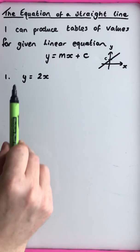For x equals 0: 3 lots of 0 is 0, and 0 minus 4 is negative 4. For x equals 1: 3 times 1 is 3, and 3 minus 4 is negative 1. For x equals 2: 3 times 2 is 6, and 6 minus 4 is 2.